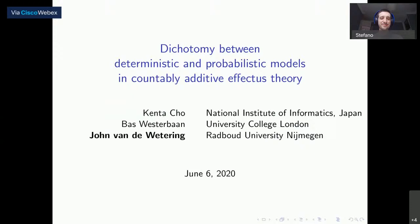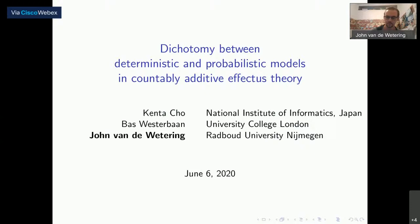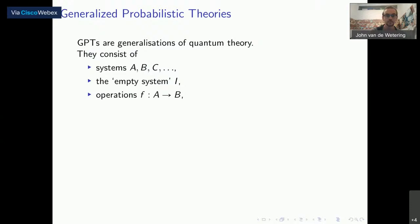I realize this title is quite a handful, but I'll be spending about half the time talking about these last two words, effectus theory, and motivating why we care about this. To understand that, we first have to start with generalized probabilistic theories, or GPTs for short, and they can be considered generalizations of quantum theory.